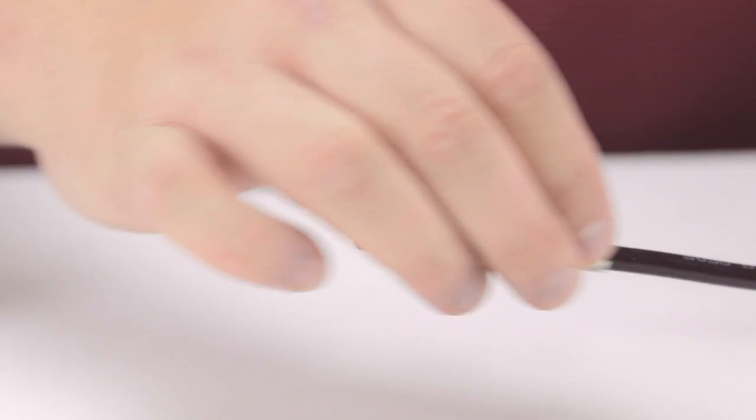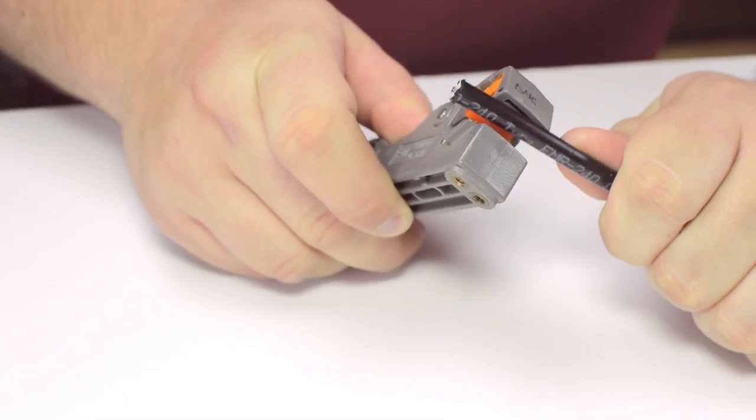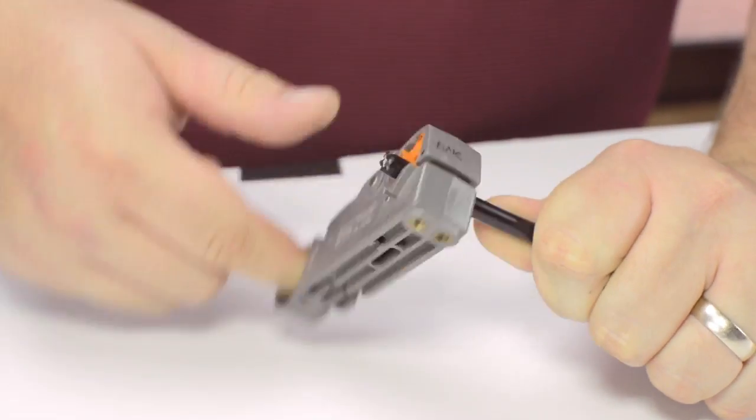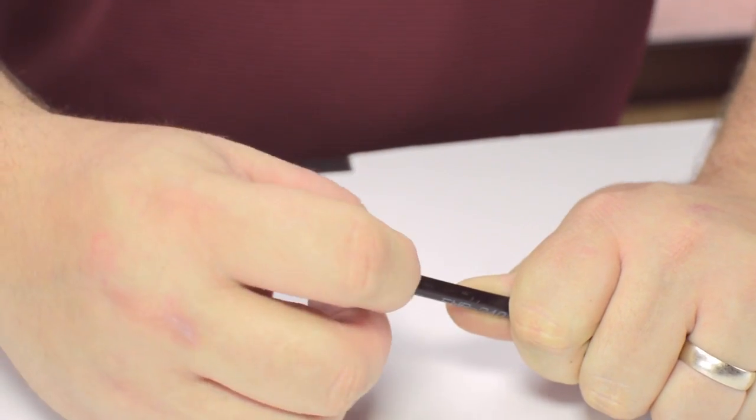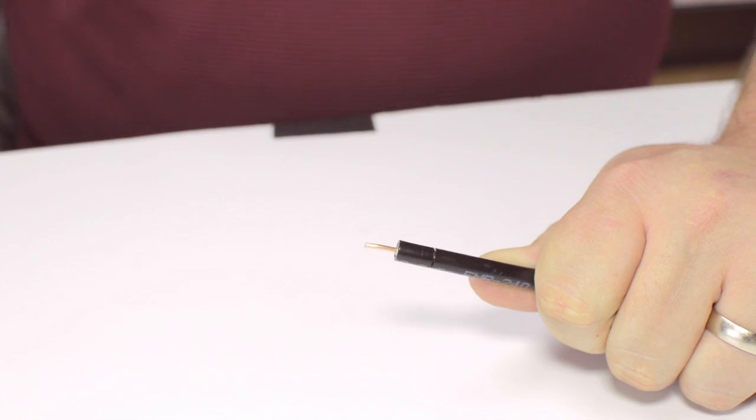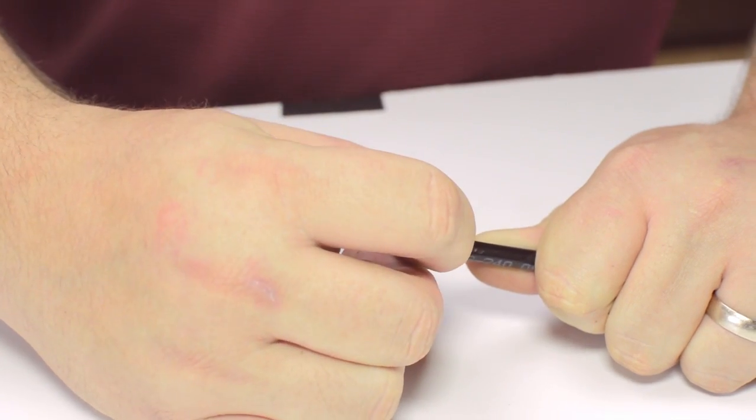Start by inserting the ferrule over the outer jacket of the cable. Then, using your cable stripper, strip back the outer jacket and dielectric. The advantage of using a cable stripper is that it will strip back the jacket and dielectric at the same time.